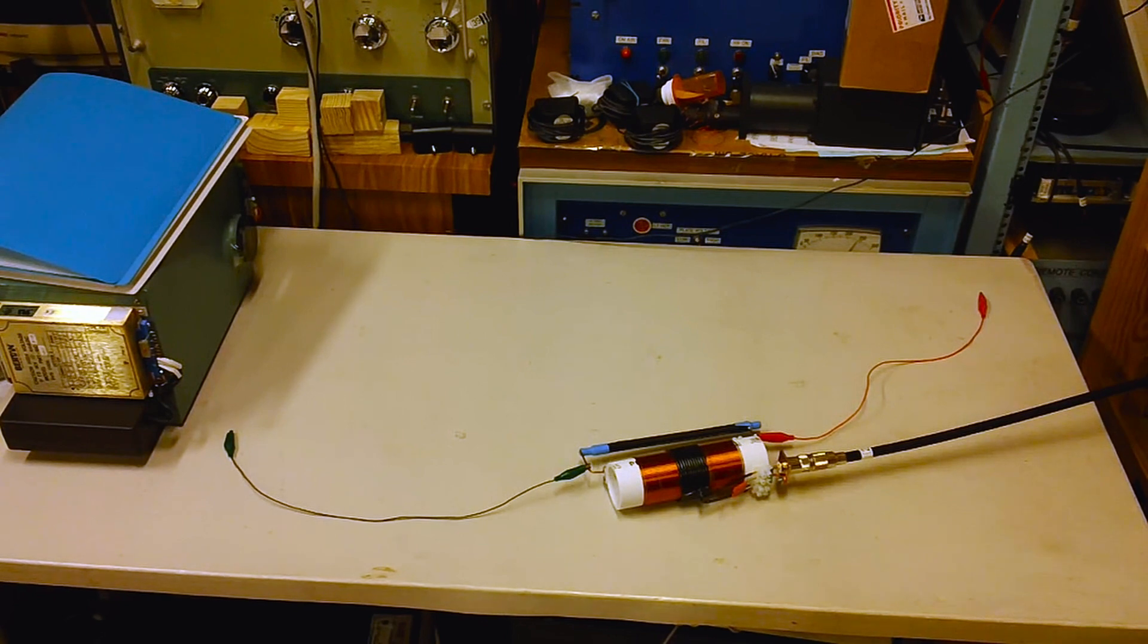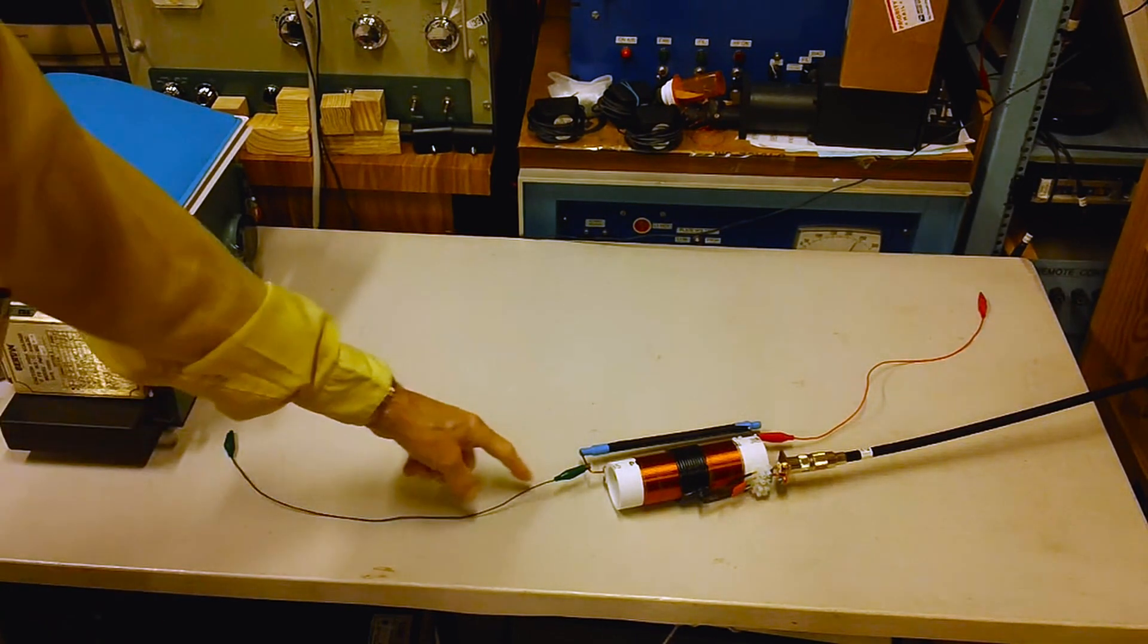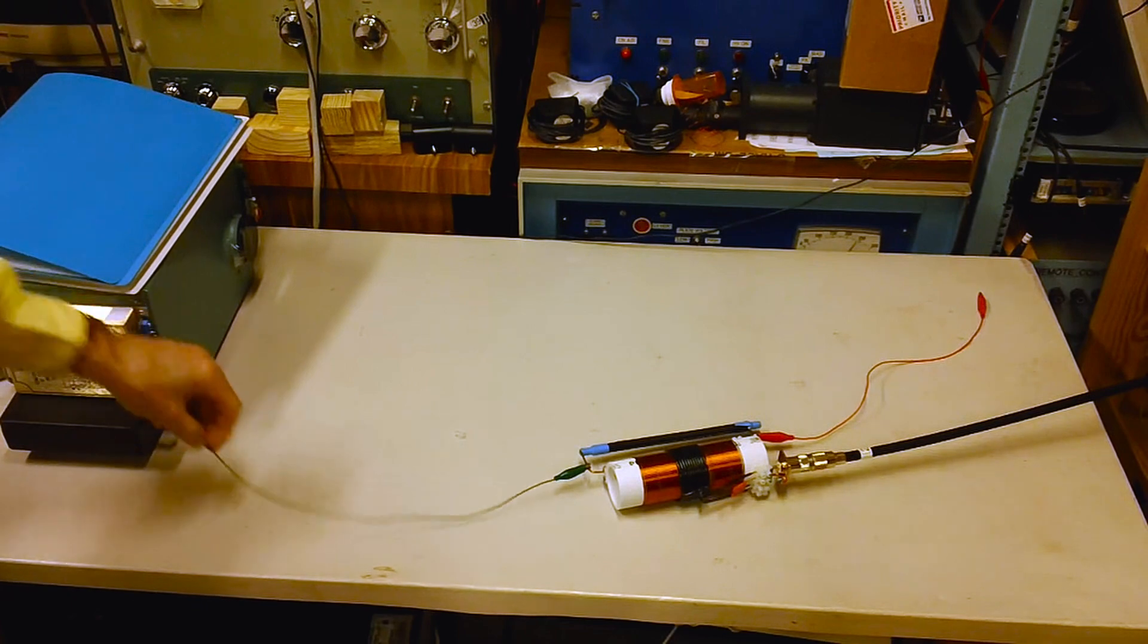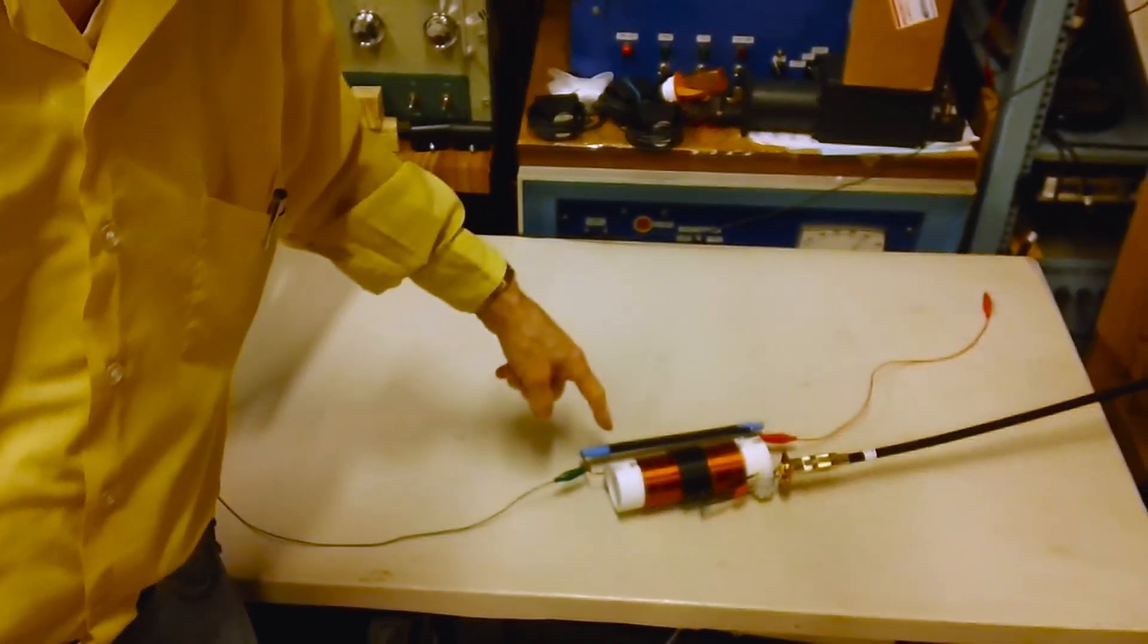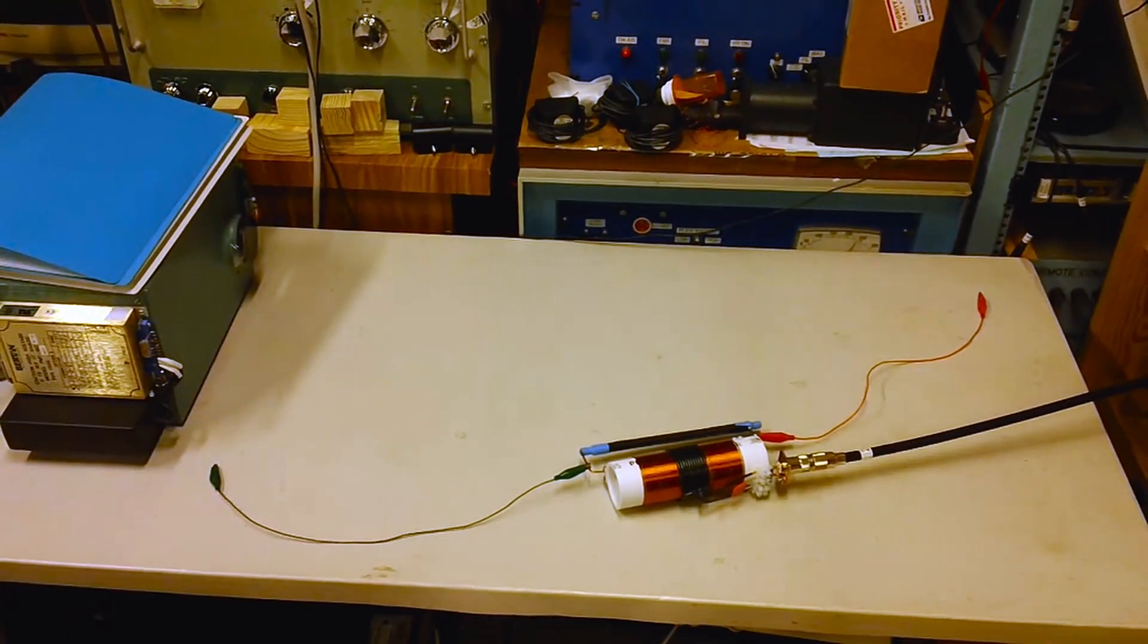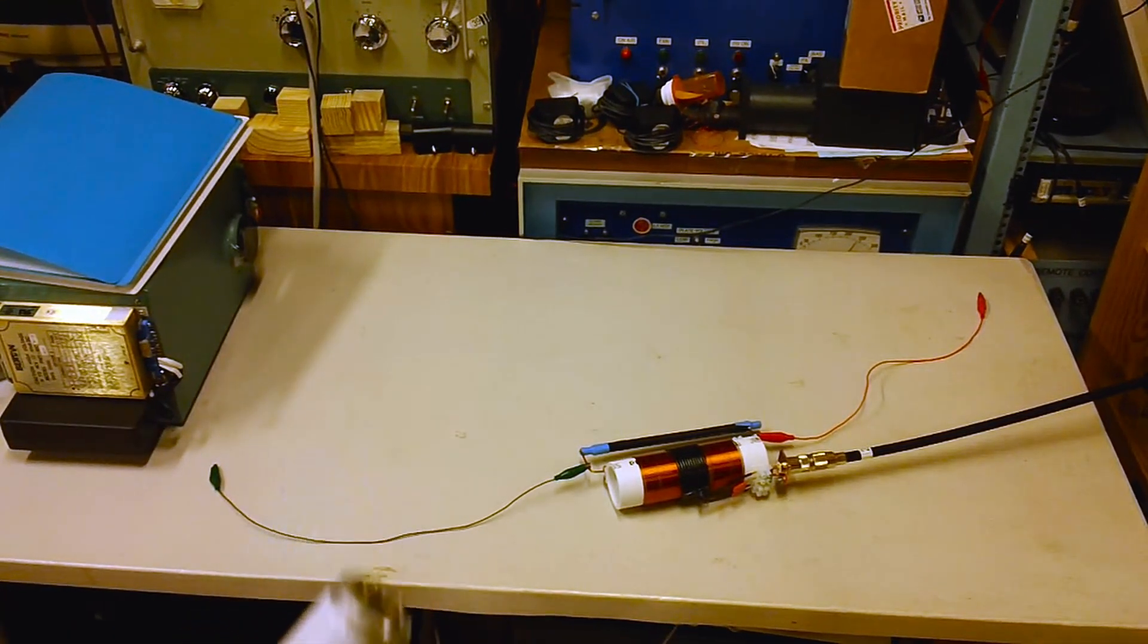In this particular instance, we have the coupler set up with two Radio Shack clip leads, each one about 15 inches long. They're stretched out in opposite directions from the coupler. It's placed on a plastic table to avoid any RF interference.